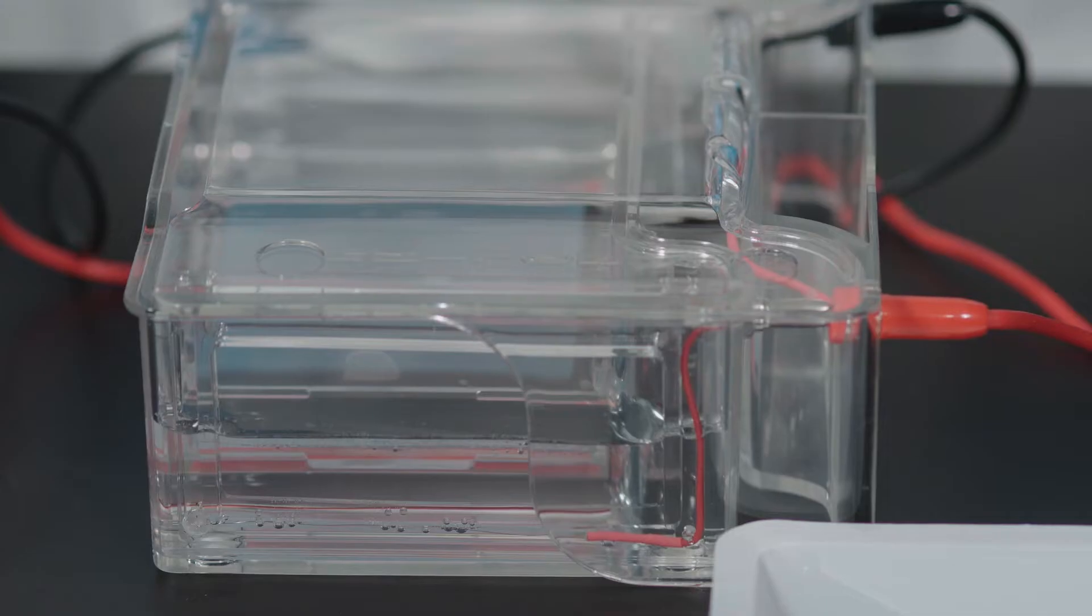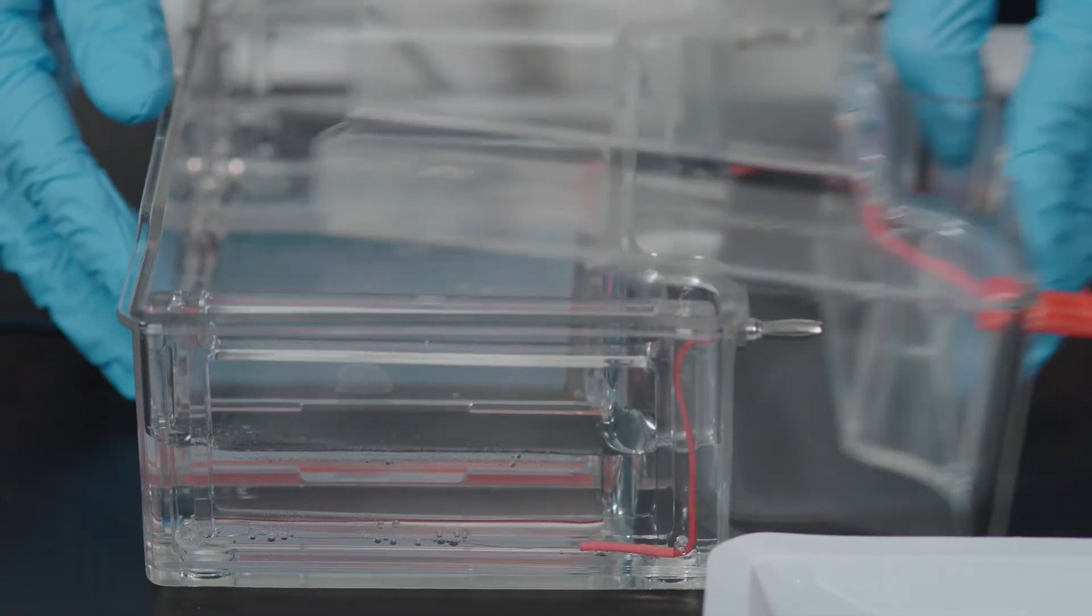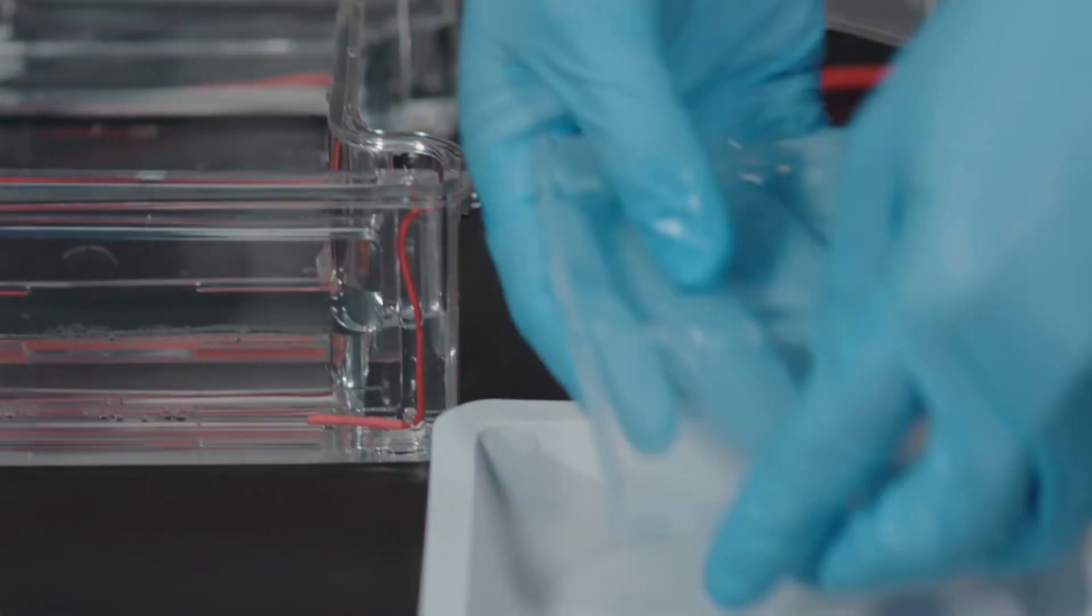After running your gel and safely turning off the power supply, remove the electrophoresis chamber lid and gently transfer the gel onto a staining tray.